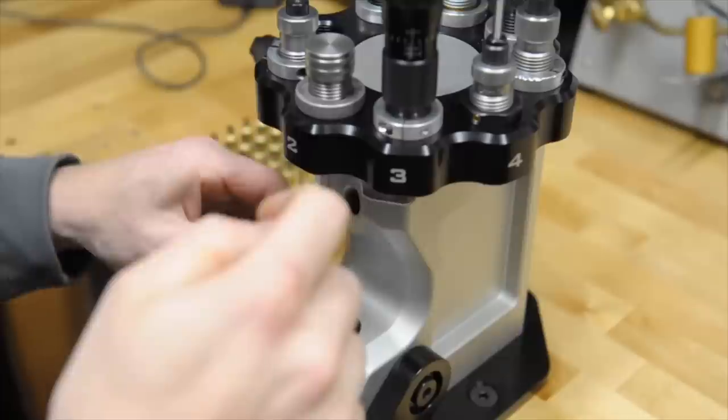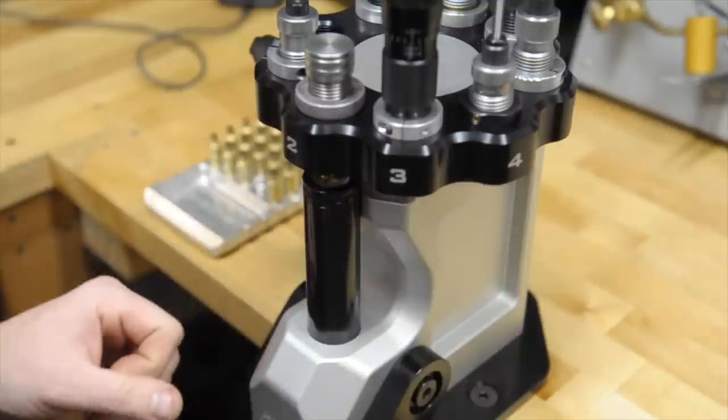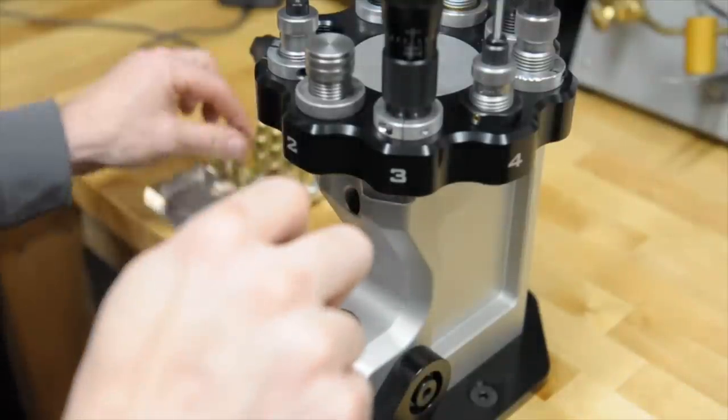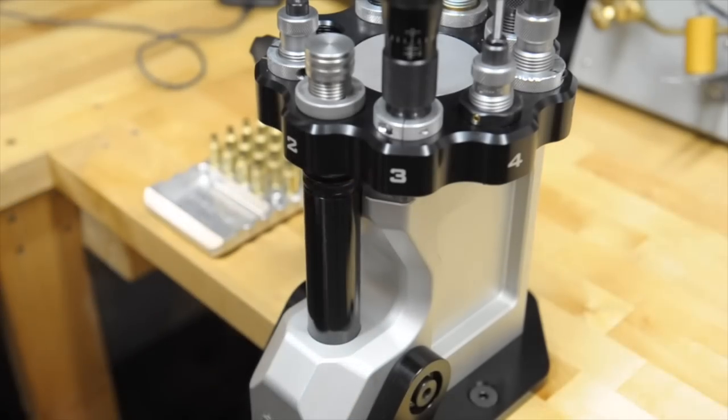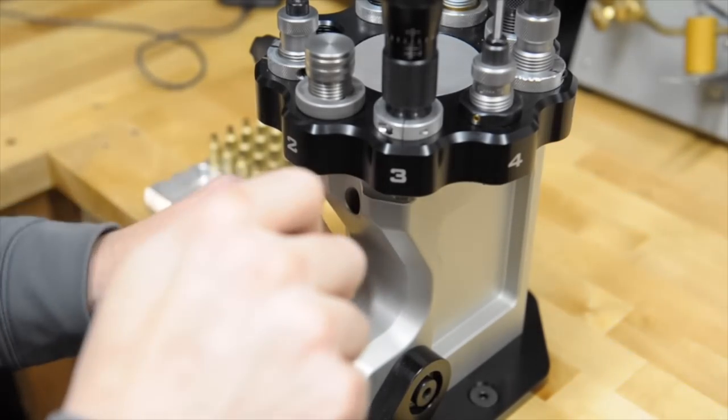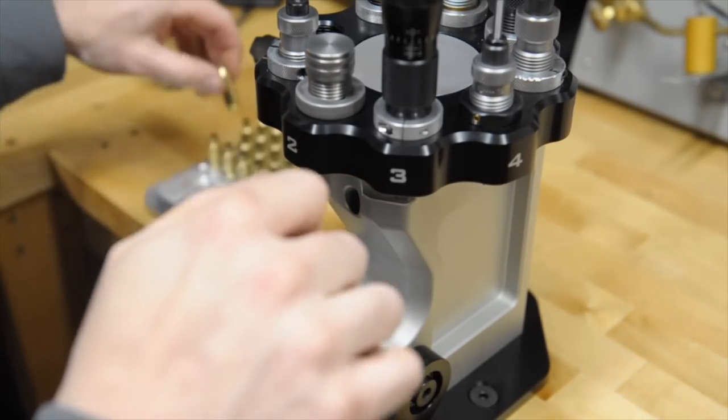What the mandrel is, is basically just a tapered uniforming tool that is going to open the case mouth up. It's going to do basically what the inverse of that neck bushing is doing, but it's going to do it the very last step. Just like when the bullet would go in, it's going to push it out to a specified dimension.